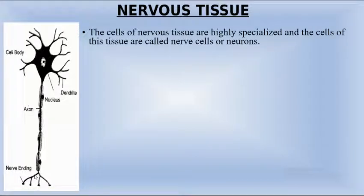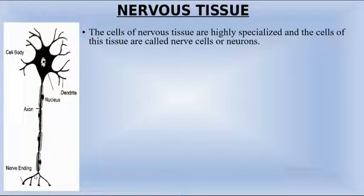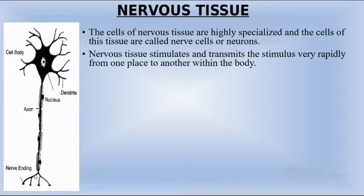The cells of nervous tissue are highly specialized and are called nerve cells or neurons. They are having a particular function and they are very special.